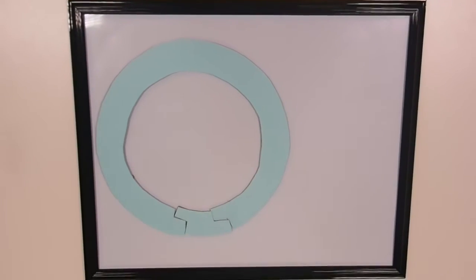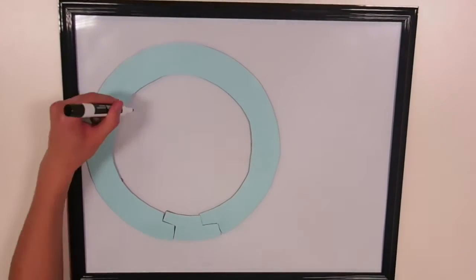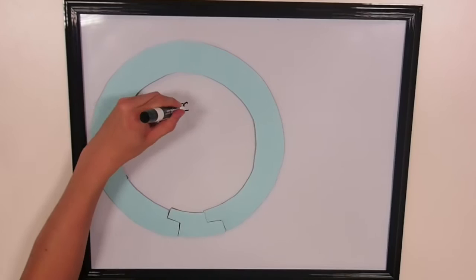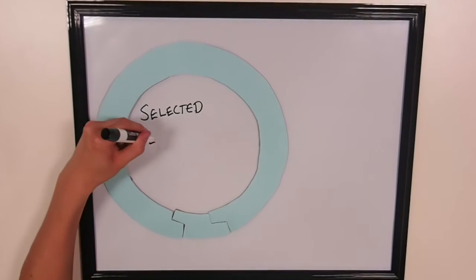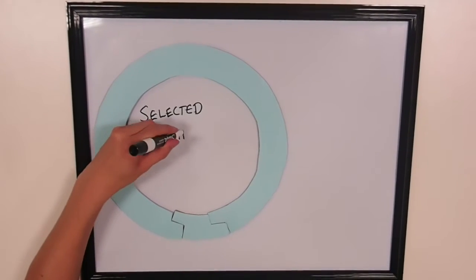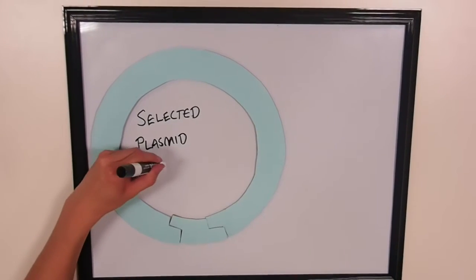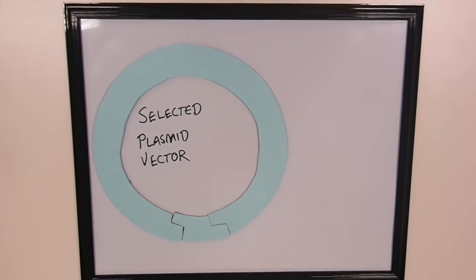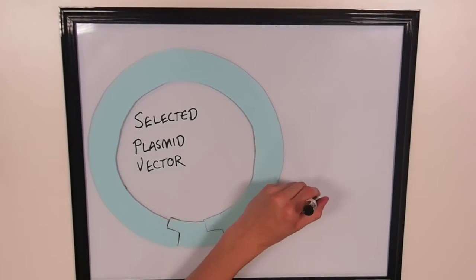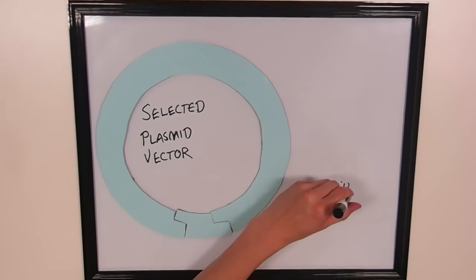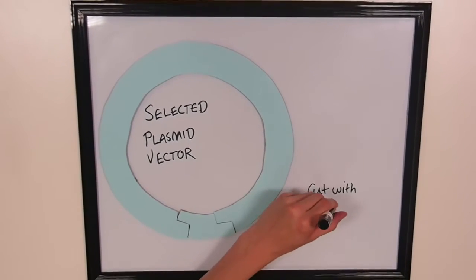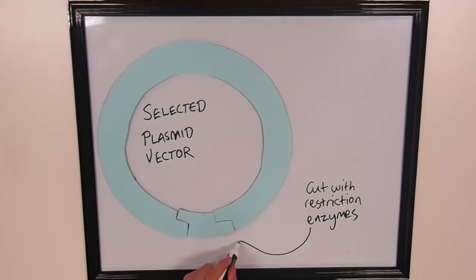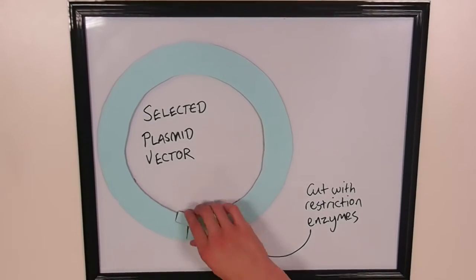After analysing the sequence of both the vector and your DNA fragment of interest, if there are no naturally occurring suitable sites, then you can use PCR-based cloning to flank your gene of interest with restriction sites that are compatible with the recipient plasmid's multiple cloning site.